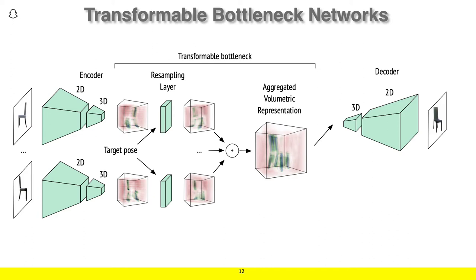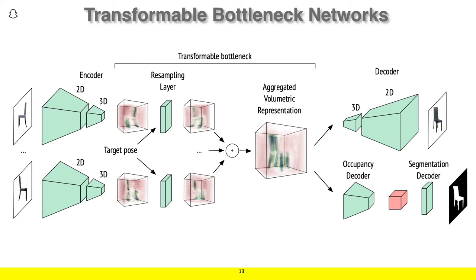Another interesting aspect of our approach is that it allows for a straightforward extension to perform volumetric reconstruction. We do this by incorporating a second decoder branch called the occupancy decoder, which computes an occupancy volume with a per-cell probability of occupancy, seen in pink here, which is then passed to the segmentation decoder to produce the segmentation mask on the far left. Thus, using only 2D segmentation supervision, we can compute a volumetric reconstruction with a per-cell occupancy probability for each point in the input image.